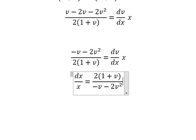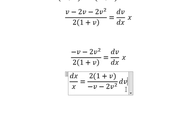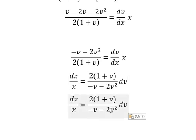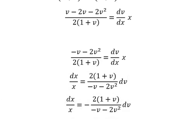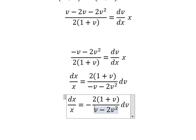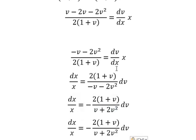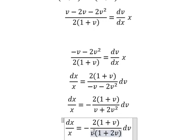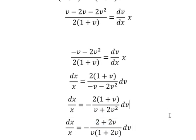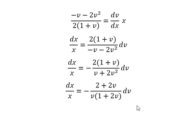So we have dx over x equals 2 multiplied by (1 plus v) over (negative v minus 2v squared), and we have dv. The negative sign is moved to the front. We can do factorization on the denominator, and we need to expand the numerator. Now we apply integration to both sides.